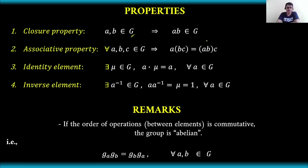We also have the associativity property: for all A, B, C elements of the group, A times (BC) equals (AB) times C. This means we can regroup — we can multiply BC first before multiplying by A, or multiply AB first before multiplying by C. That is the associative property.